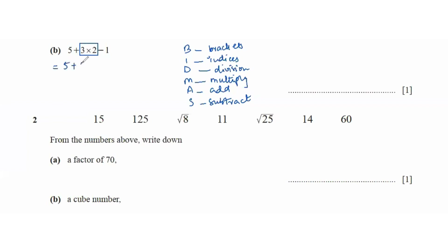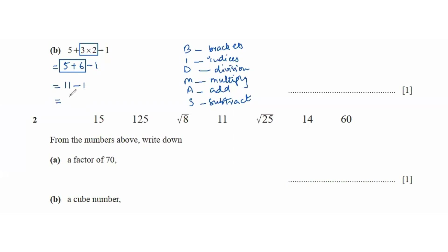So we now have 5 plus 6 minus 1. Next we do addition: 5 plus 6 gives us 11. And then 11 minus 1 is 10. So that is your answer.